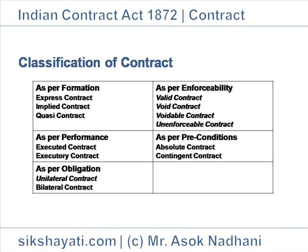As per Preconditions. Absolute Contract: these contracts are unconditional and not dependent on any precondition. Example: X agrees to sell his Maruti car to B at Rs. 1,00,000. This is an absolute contract.